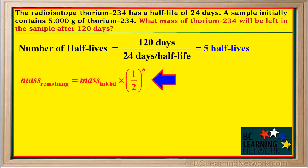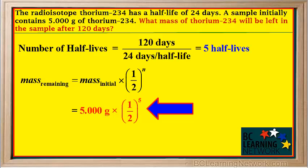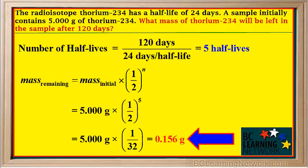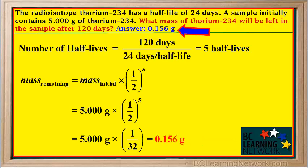To find the mass remaining after 5 half-lives, we use the equation: mass remaining equals initial mass times (1/2) to the power n. Since n equals 5, we take the initial mass of 5 grams and multiply by (1/2)^5. One half to the power 5 is equal to 1/32, so the answer is 5 grams times 1/32, which equals 0.156 grams. So 0.156 grams of thorium-234 will be left in the sample after 120 days.